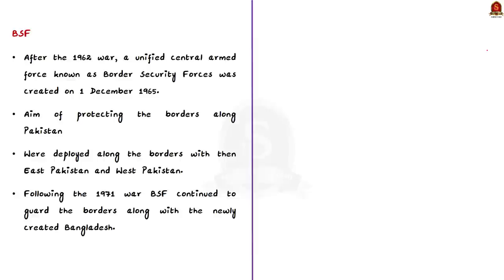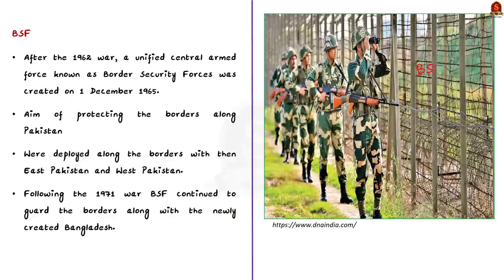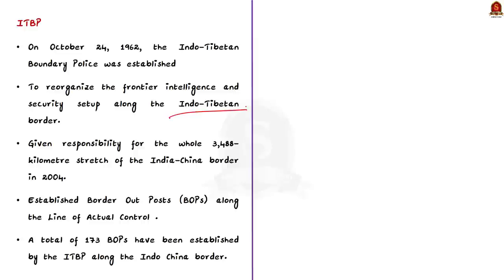After the 1962 war, a unified central armed force known as the Border Security Force was created on 1st of December 1965, with the aim of protecting borders along Pakistan. Initially raised with 25 battalions, BSF today comprises 192 battalions. They were deployed along the borders with East Pakistan and West Pakistan. Following the 1971 war, BSF continued to guard the borders along the newly created Bangladesh. On October 24, 1962, the Indo-Tibetan Border Police was established to reorganize frontier intelligence and security along the Indo-Tibetan border. The ITBP Act was established by Parliament in 1992 and the ITBP was given responsibility for the entire 3,488 km India-China border in 2004, establishing 173 border outposts along the line of actual control.